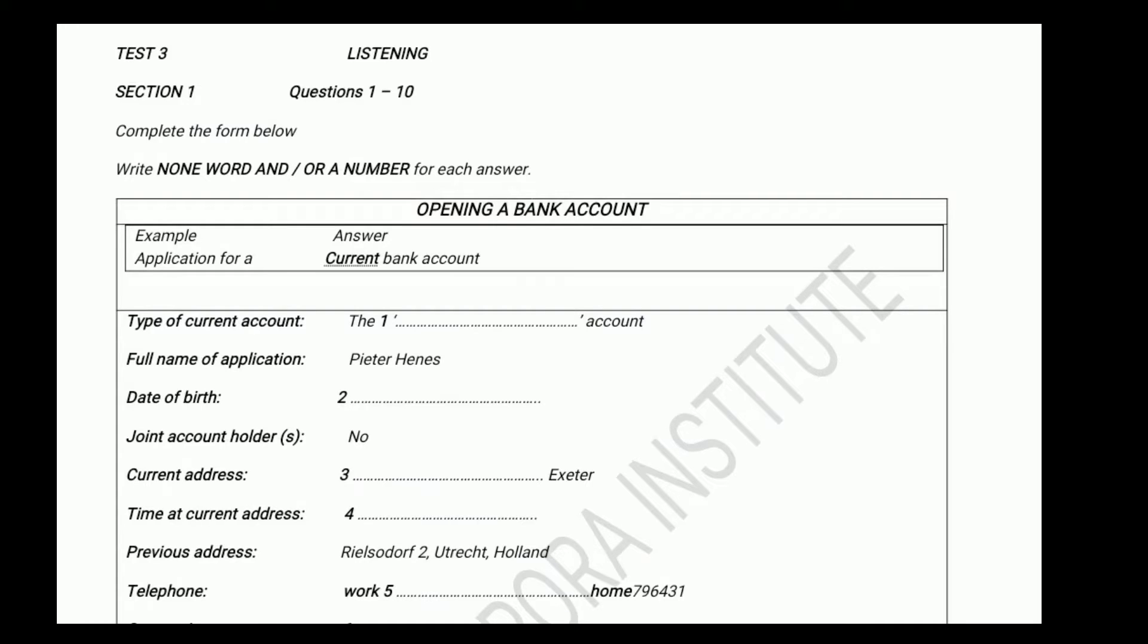Good morning, I'd like to open a bank account, please. Certainly, if you'd like to take a seat, I'll just get some details from you. It won't take long. Thanks. Is it a current account or a deposit account you wanted? A current account. Right, I've got the application form here. We have different types. I see you've got our leaflet there. I've decided on the one called Select. Right, that's fine. So first of all, can I have your full name, please? Yes, it's Peter Hennies. That's P-I-E-T-E-R. Is it H-E-N-N-E-S? Only one N, actually. It's a less common spelling of the name. Oh, right. OK. And what's your date of birth, please? The 27th of the 1st, 1973. Right. And will this be a joint account? No, just myself. OK, fine. And where are you living, Mr. Hennies? Fifteen Riverside. Is that all one word? Yes. Exeter? Yes.